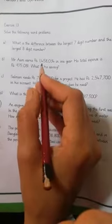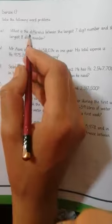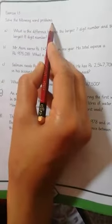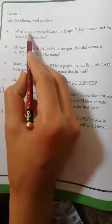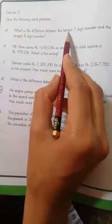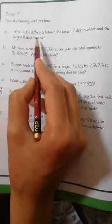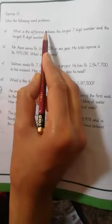بسم اللہ الرحمن الرحیم students, today we are going to start exercise number 13, solve the following word problems. Look at part A: what is the difference between the largest 7 digit number and the largest 8 digit number? Students, یہ subtraction کے question ہے.